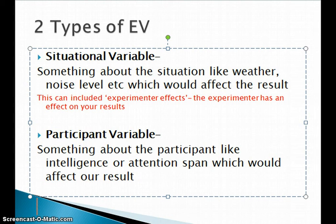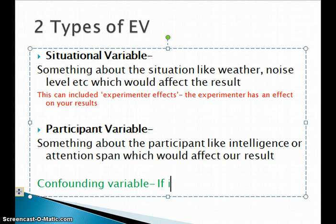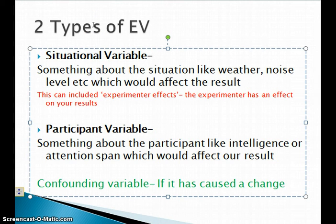An extraneous variable is something that might cause a difference in the results. It is called a confounding variable if it actually has caused a difference. So extraneous variables are things we think might have an effect, while a confounding variable is when we know it definitely has. That covers IVs, DVs, the different types of hypotheses, and extraneous variables in this video.